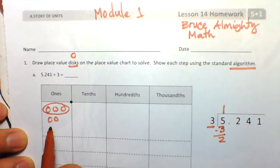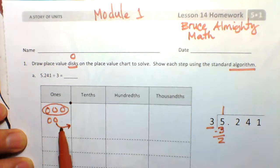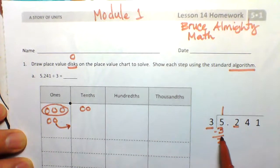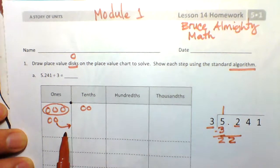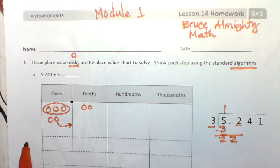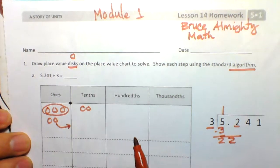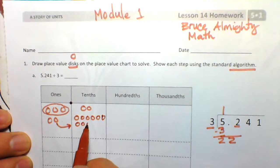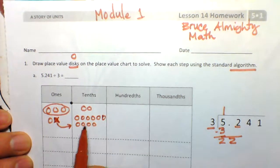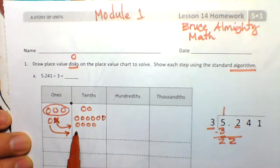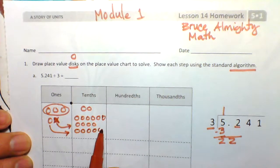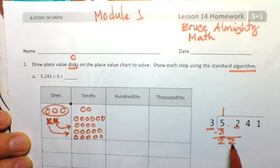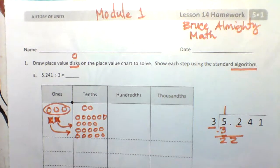Now we're going to convert these ones into tenths. There are 2 tenths already here, which is the number 2. We bring the 2 down. Each whole one is broken down into ten tenths, so we convert both remainder ones — giving us 20 tenths — and combined with the existing 2 tenths, we now have 22 tenths.